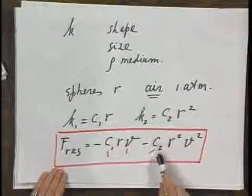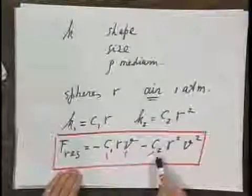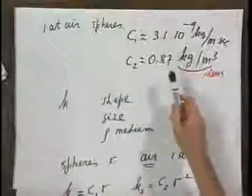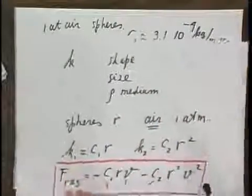If we didn't have air but we had, for instance, water, then you can be sure that this C2 would be probably some thousand times larger than this value because the density of water is roughly thousand times higher than the density of air at one atmosphere.